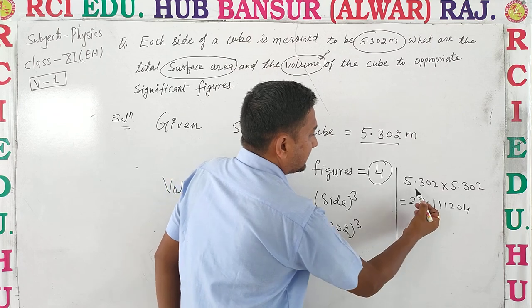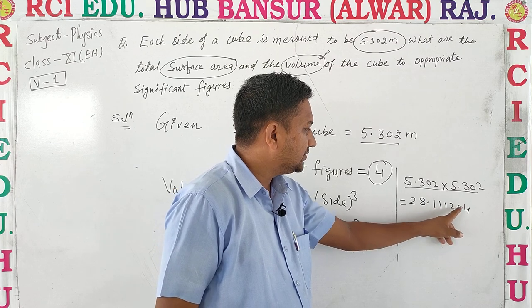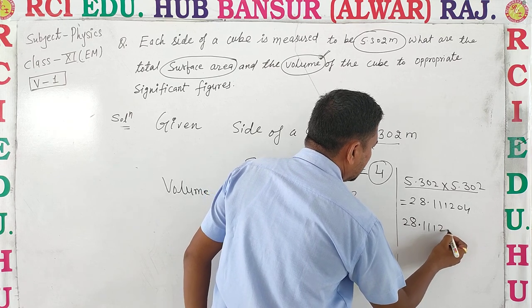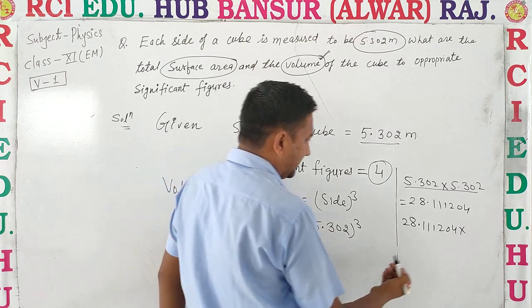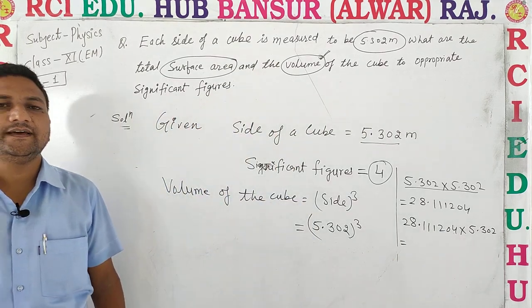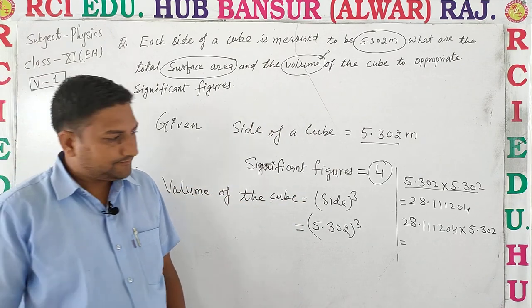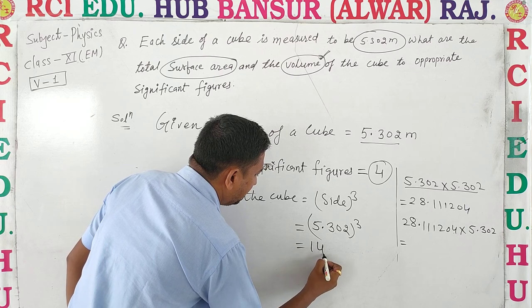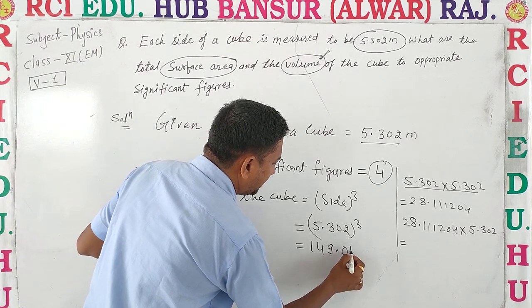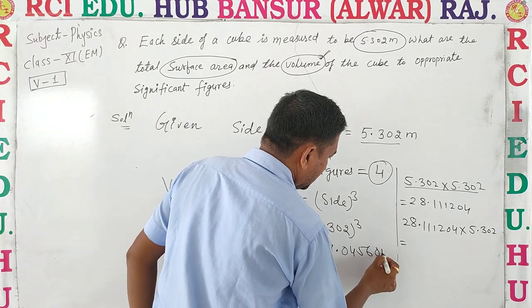5.302 का square तो calculate कर रखा है: 28.11204. इसको multiply करेंगे फिर से 5.302 से, तो cube हो जाएगा। जब multiply करेंगे तो answer आएगा 149.045604 meter cube.